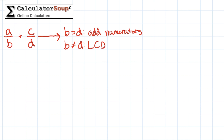The least common denominator is the smallest number that can be a common denominator for a set of fractions. Once you find the LCD, rewrite the fractions you want to add as equivalent fractions with the LCD as the denominator. Then add the numerators and put the result over the common denominator. In both of these cases, simplify the answer after adding the fractions if needed.